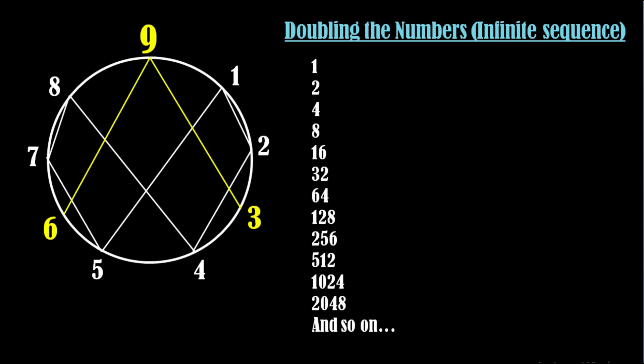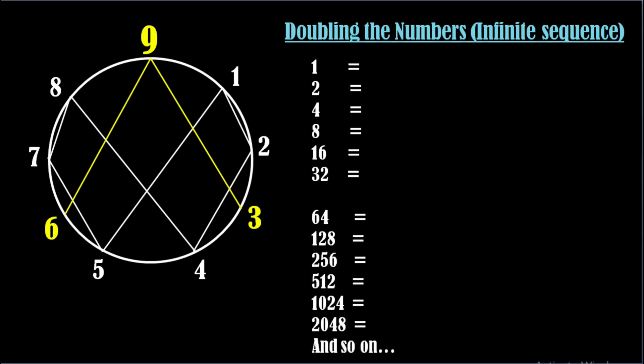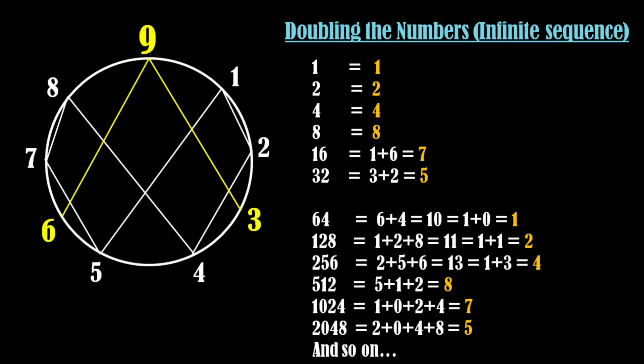This sequence starts from number one: 1, 2, 4, 8 and so on. As you can notice, the next number is the double of its previous number. Now to convert all these numbers into a single digit number, we will use a technique known as the digital root technique. For this we will add the digits of the number until we get a single digit number. As a result we will get the digital root of the number.